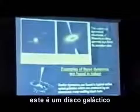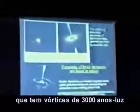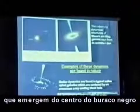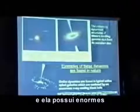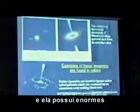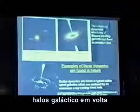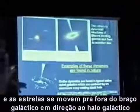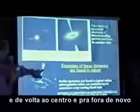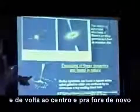This is a galaxy. Galactic disks have 3,000 light-year vortices that emerge from the black hole at the middle, and they have huge galactic halos all around them. The stars move out from the galactic arm into the galactic halo and then back down and back out.